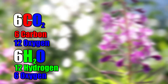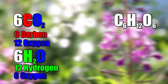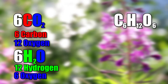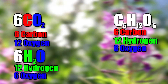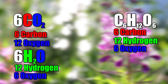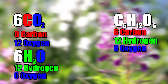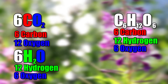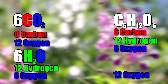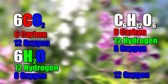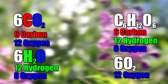Following the photosynthesis reactions, we now have one glucose molecule, which is made of six carbon atoms, 12 hydrogen atoms, and six oxygen atoms. This then leaves us with 12 oxygen atoms left over, which then pair together to give us six oxygen molecules.